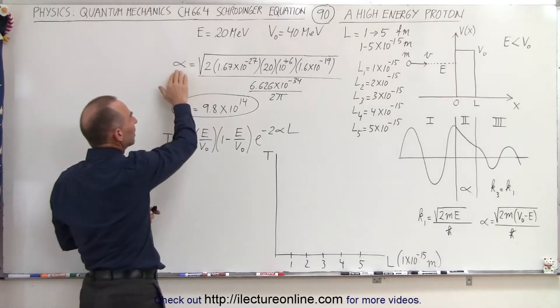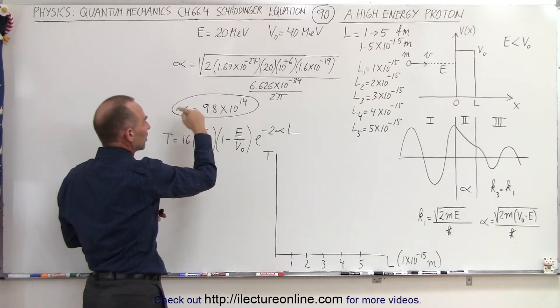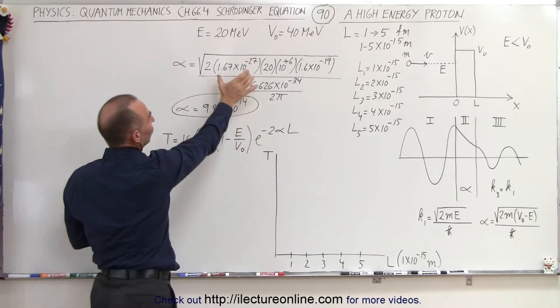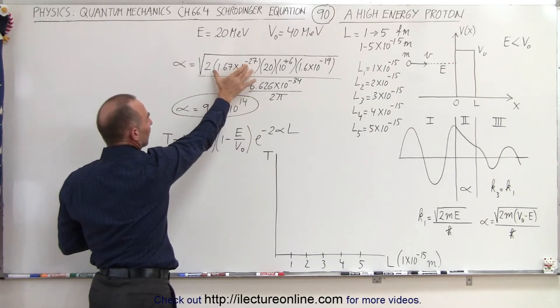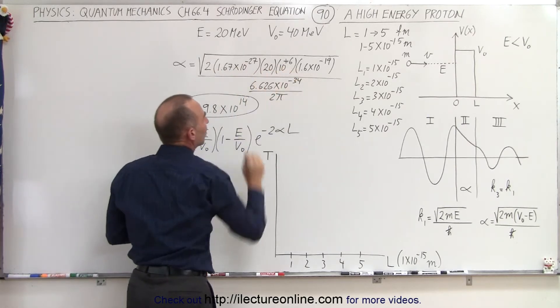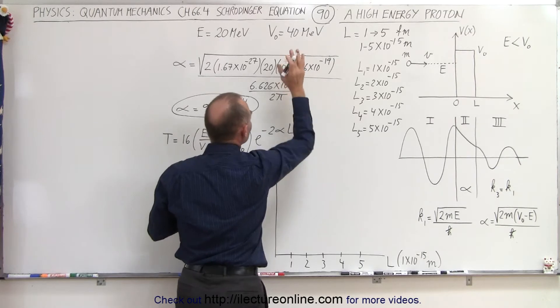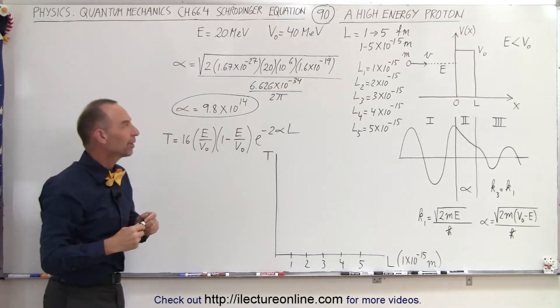I've already pre-calculated the alpha. In this case, alpha is a very large number, 9.8 times 10 to the 14th, because first of all, the proton has a lot of mass, and it had a lot of energy. Let's see, oh, this should not be minus 6, this should be plus 6 here. But I think I punched the right number into the calculator.